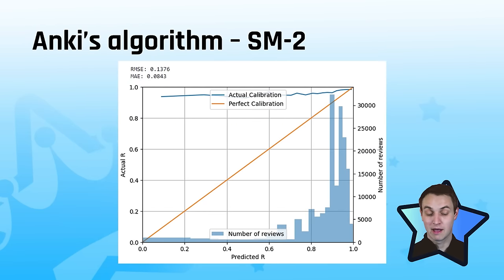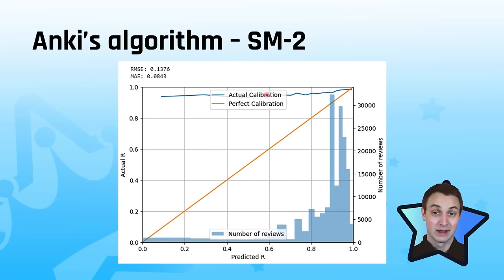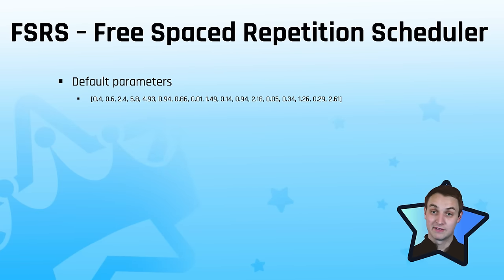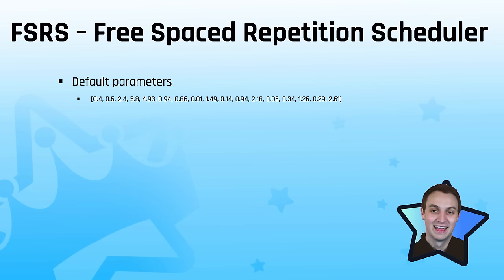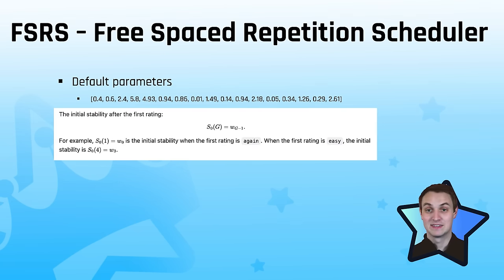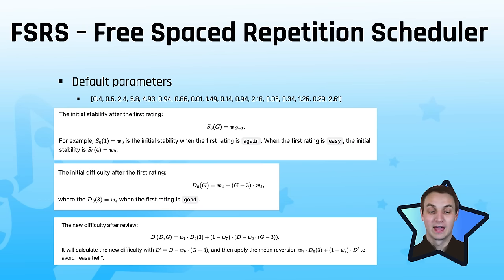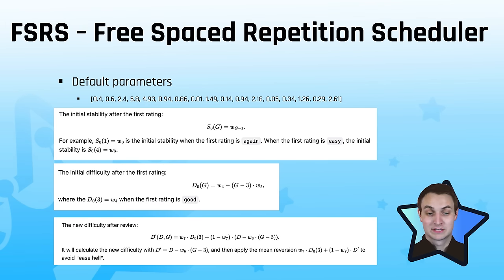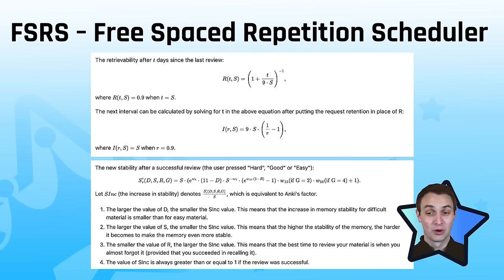Looking at the SuperMemo 2 algorithm for the same collection, the blue and orange lines don't line up at all — when it predicts 60% recall you're actually getting things right 95% of the time, meaning you're reviewing cards far more often than necessary. FSRS uses 17 separate parameter values and complicated equations behind the scenes. I initially tried to learn what all of them are, but honestly you can just ignore this — it's not worth trying to understand the equations.